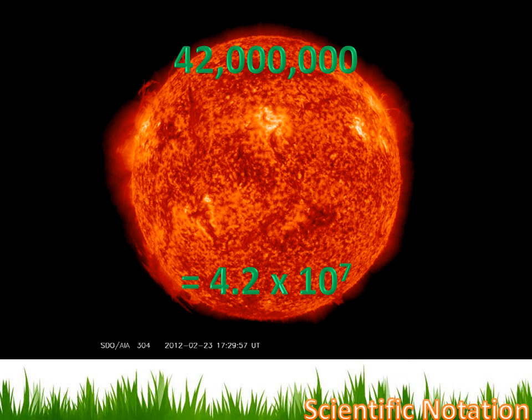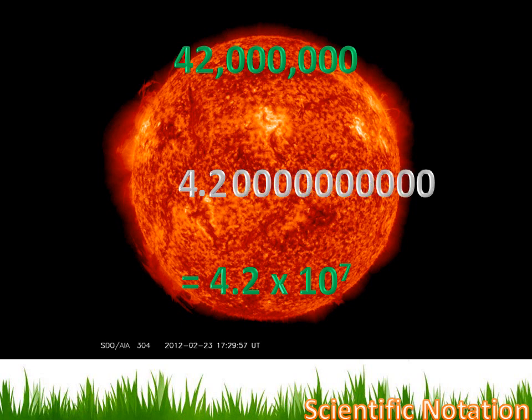Now, we talked about moving from standard notation to scientific notation. What if you had to go the other direction? What if they gave you this number, 4.2 times 10 to the seventh, and asked you to convert it to standard form? Here's how you do it. You'd start with your 4.2. And then you want to add a whole bunch of zeros after it. Now, what you want to do is move your decimal seven places to the right.